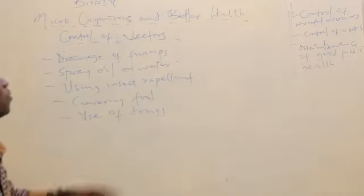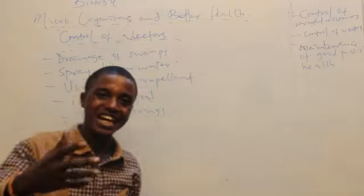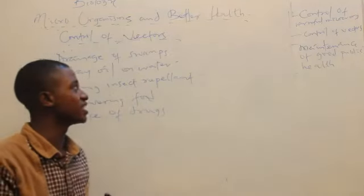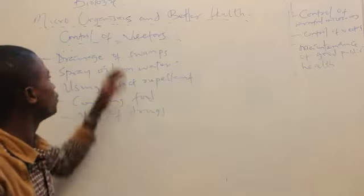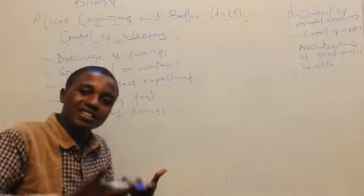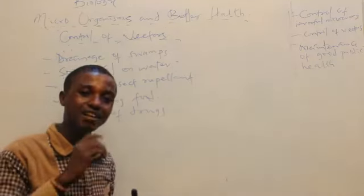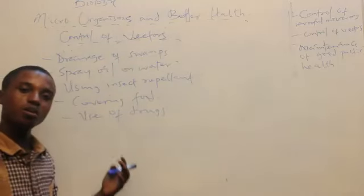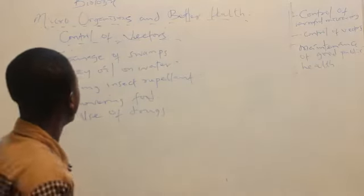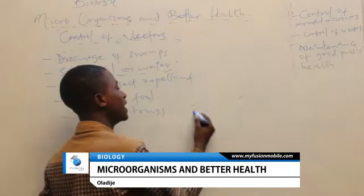How do we control these vectors? Number one is drainage of swamps. Swamps are those moist areas around your vicinity. Those areas happen to be breeding grounds for microorganisms. When you drain those areas, you take away the water present, that area becomes uninhabitable for organisms to grow. Mosquitoes will not be able to breed in such areas.